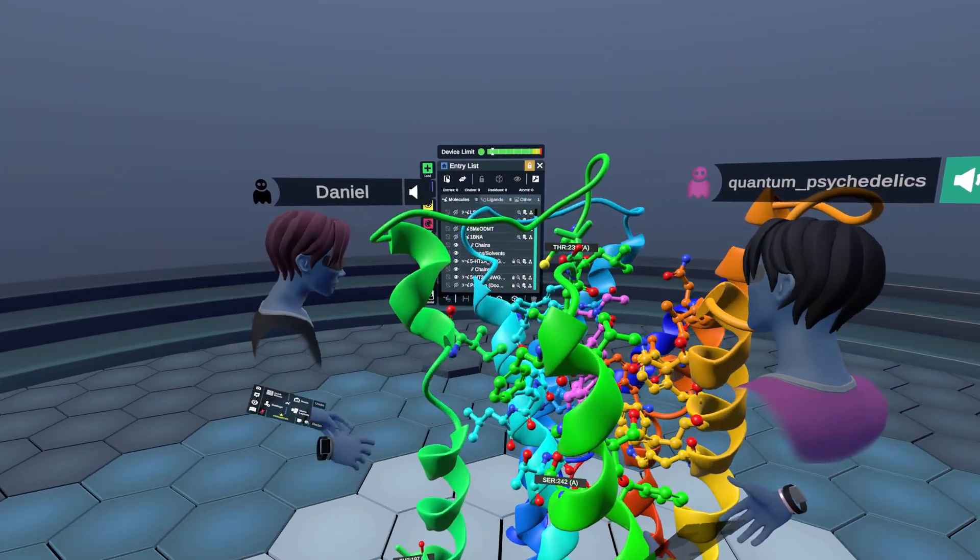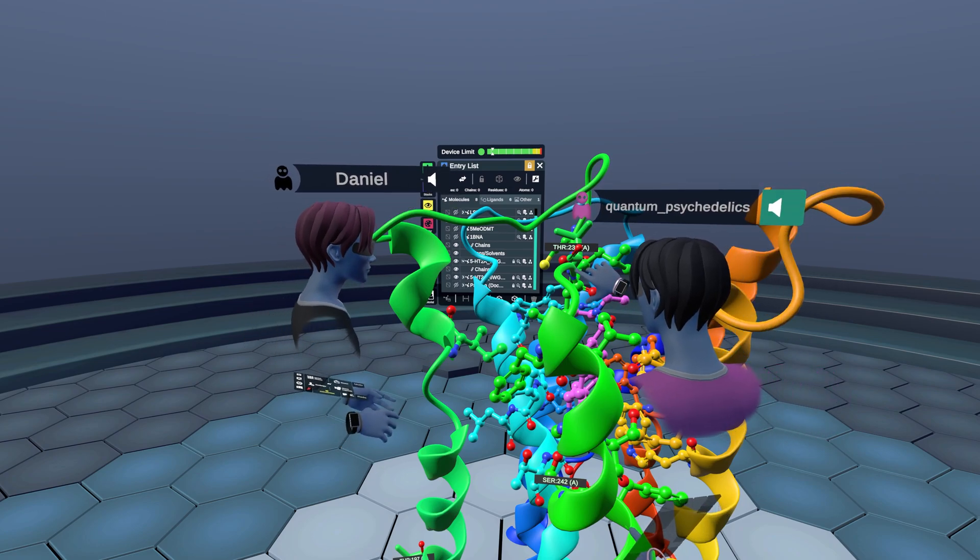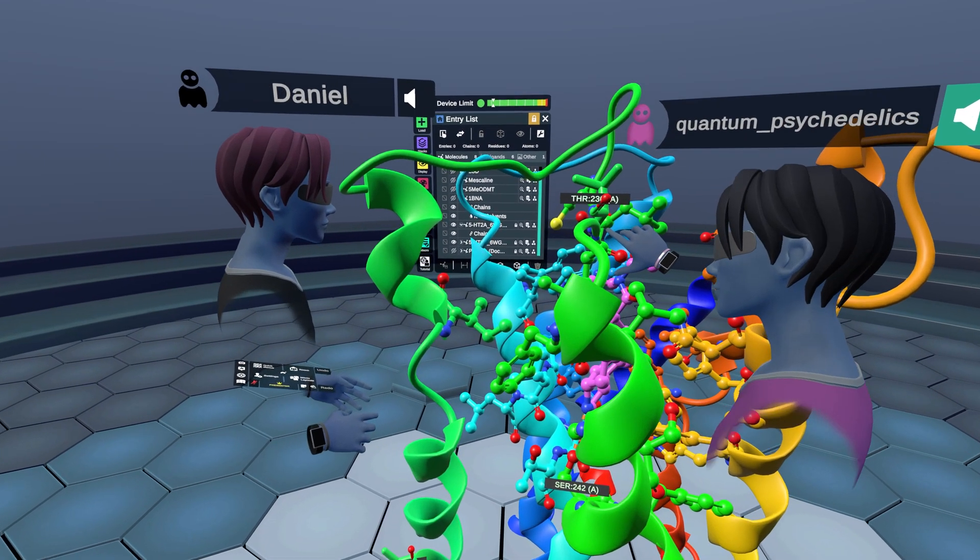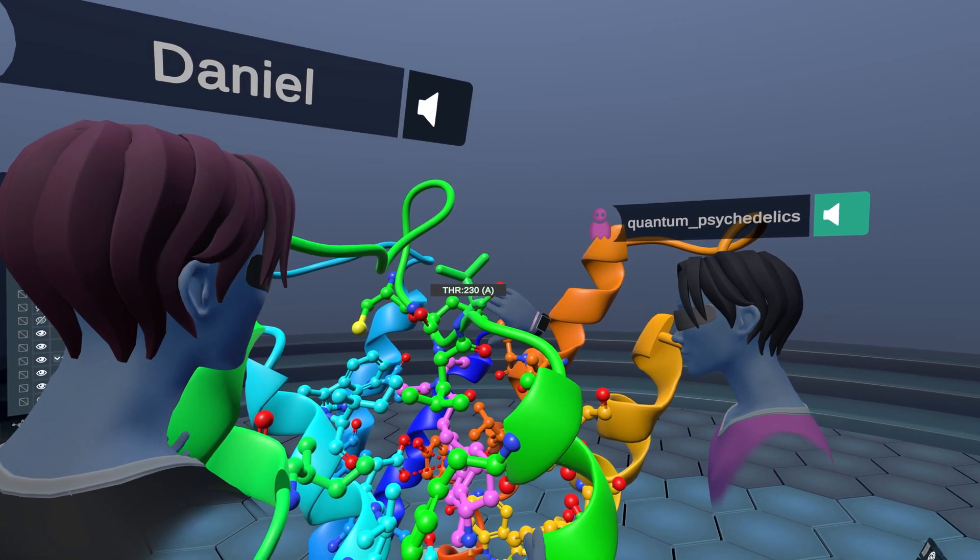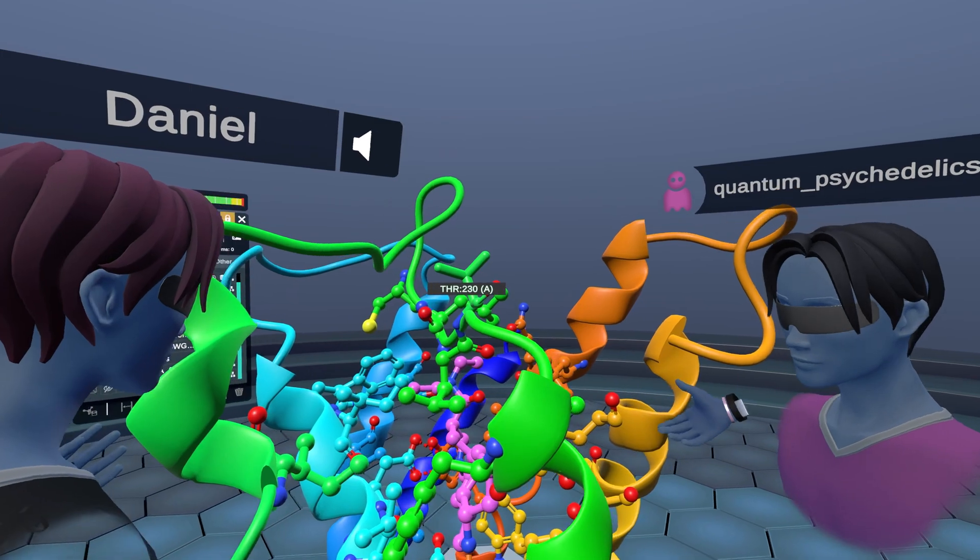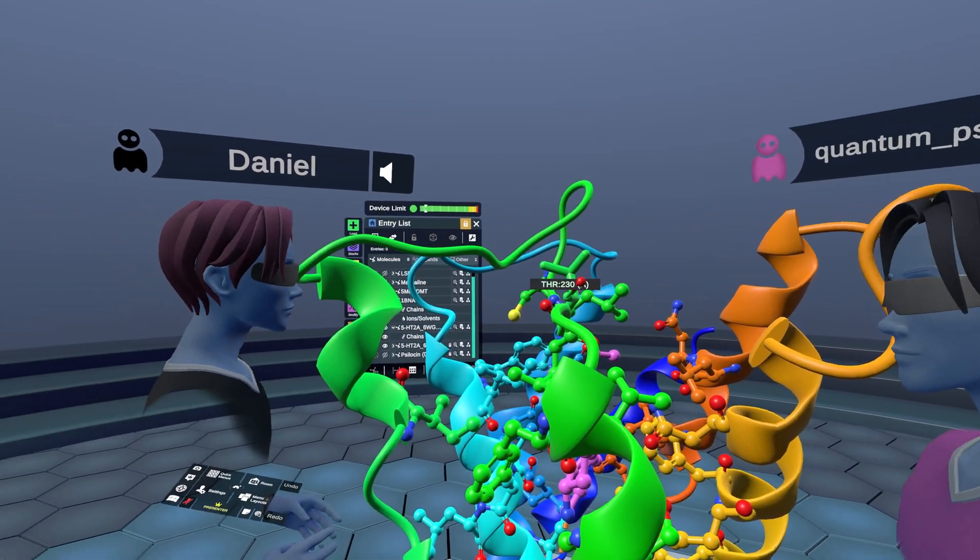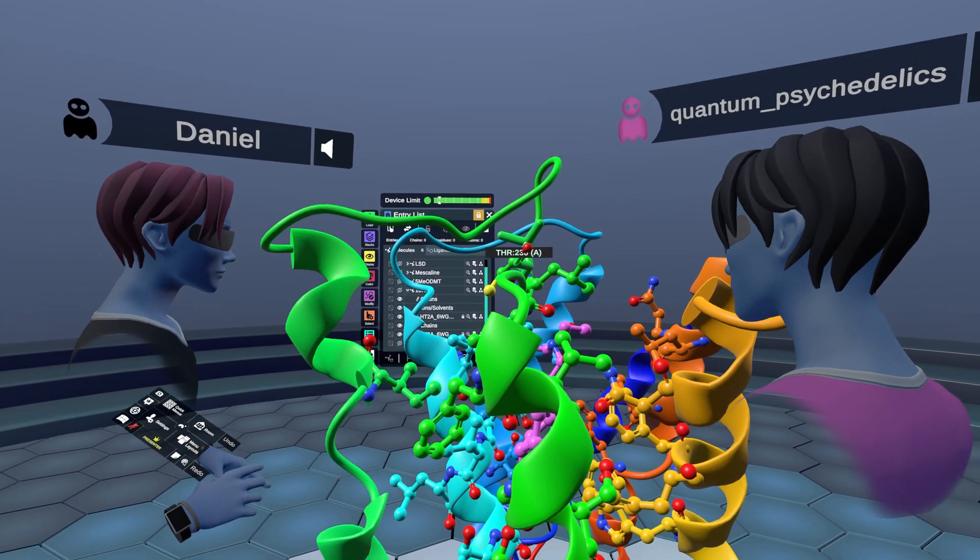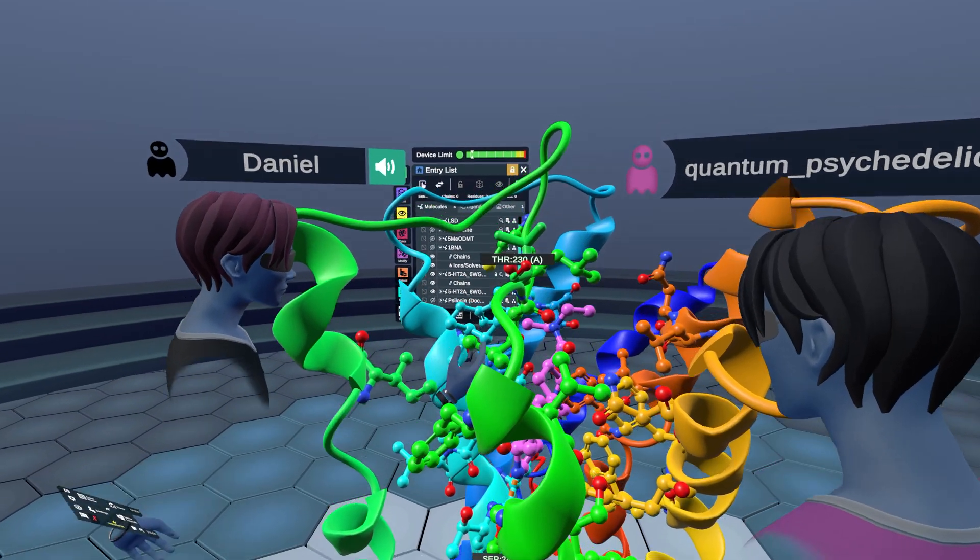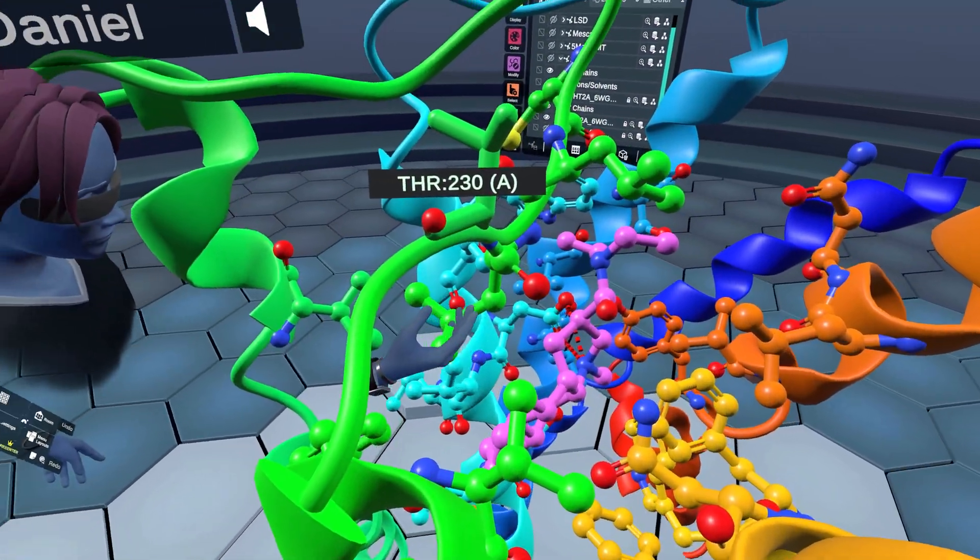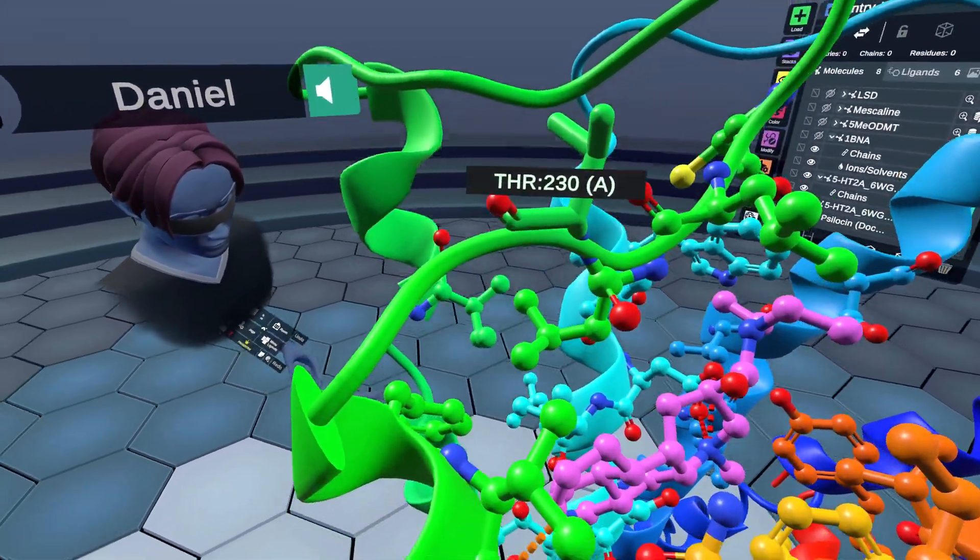I guess we could also comment on the fact that the threonine, it points away from the binding, even though it's technically interacting with the binding pocket, it points away from the binding pocket versus inside. Could be some speculation there as to why it doesn't have an effect. That's right. No, that makes a lot of sense.